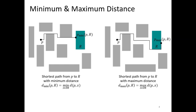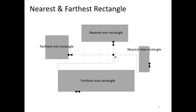Minimum Distance D-min(P,R) is the generally used distance between two objects, while Maximum Distance D-max(P,R) is determined by the farthest point on the rectangle from P. With those two distances, we can define four kinds of rectangles according to the location from the point with Minimum or Maximum Distance.